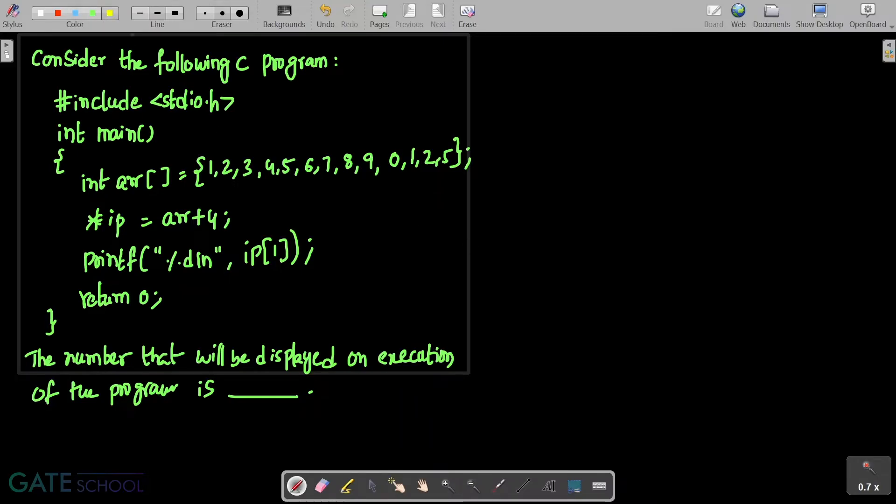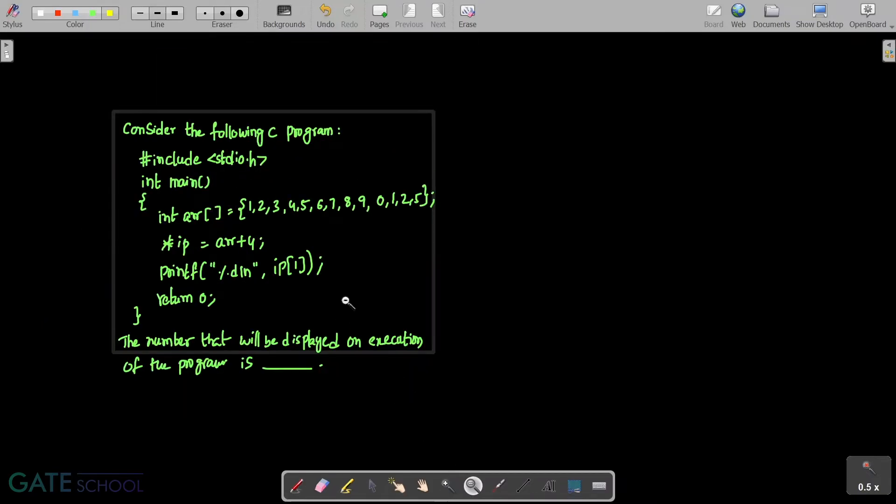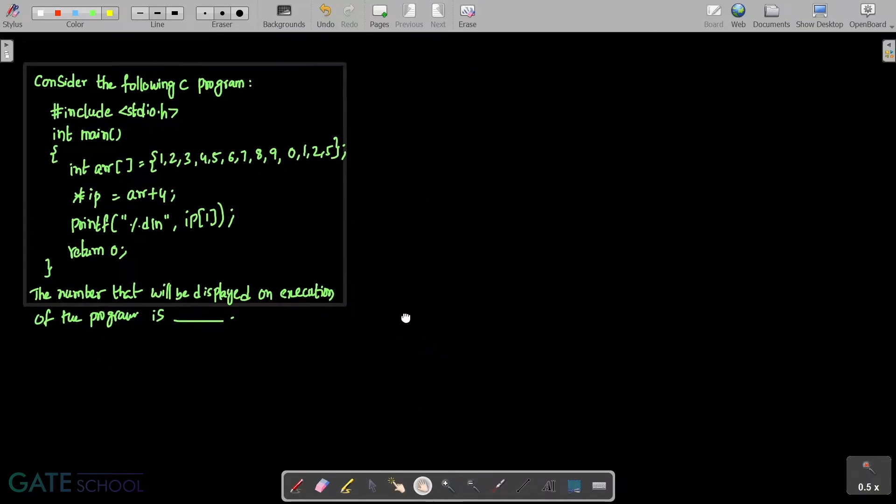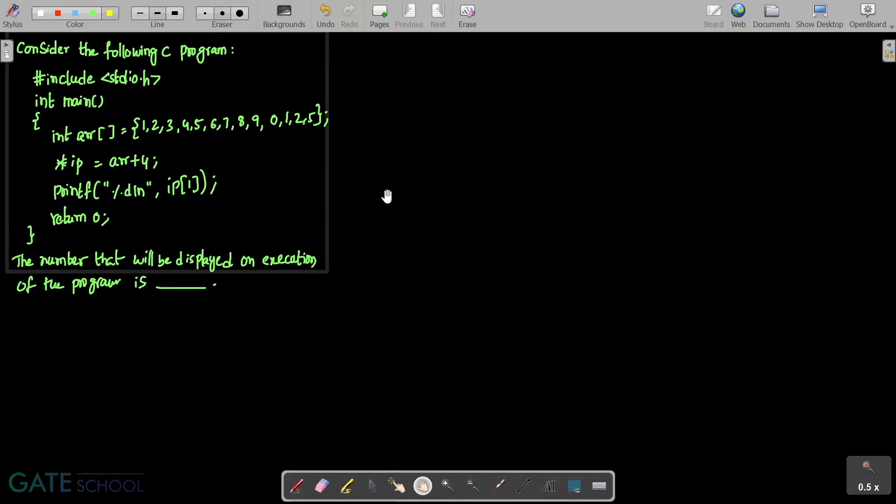We have the array and its corresponding content. Let us write down the array and its corresponding content. There are many locations inside the array, many values, for example,